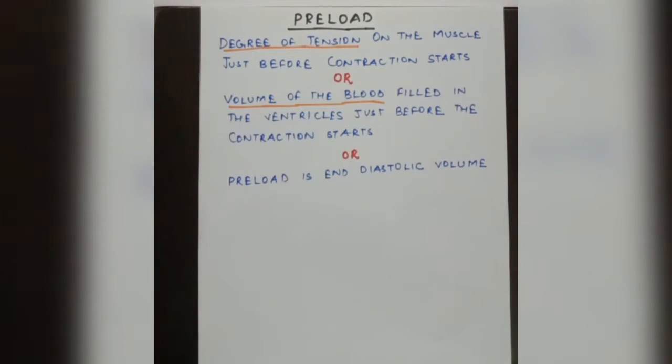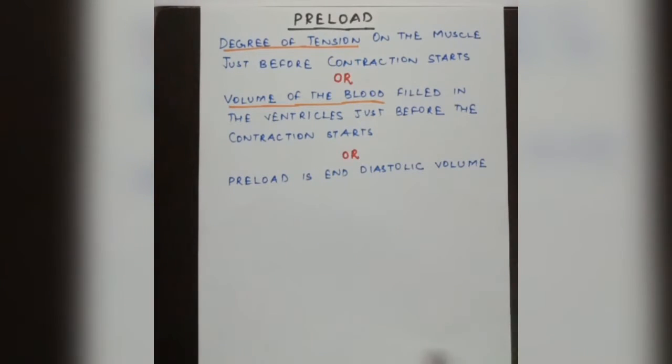So basically, which volume of blood is present just before contraction starts? That is the end diastolic volume.